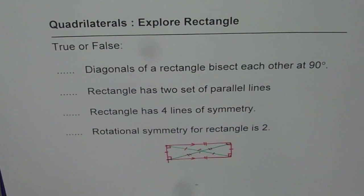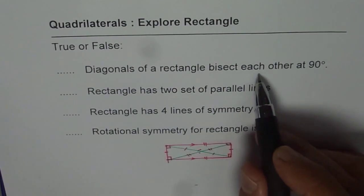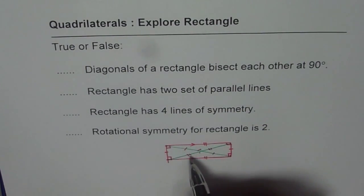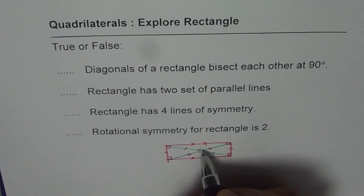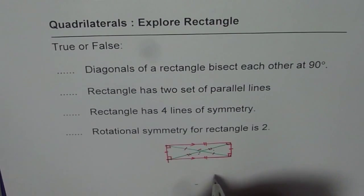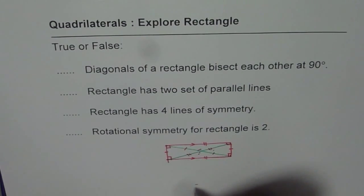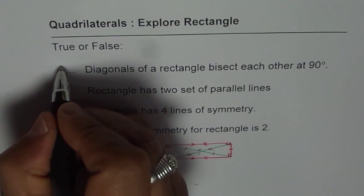Here are my answers. Diagonals of a rectangle bisect each other at 90 degrees. Well, diagonals do bisect, but this angle is not 90 degrees. Angle opposite to the longer side is obtuse. So we have obtuse angle here and acute here. So angle opposite smaller side is smaller than the angle opposite longer side. So this one is false.